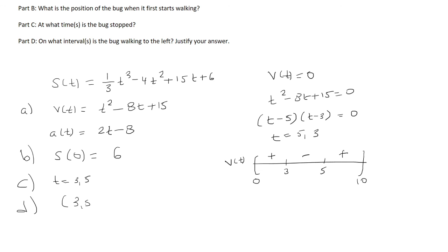So it's moving to the left when the velocity is negative, and that's where we found here between 3 and 5. And you do not want to include the endpoints because the velocity there is 0 and the bug is not moving. So we'll say 3 to 5 because v(t) is negative.